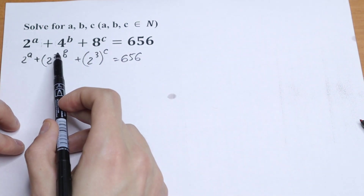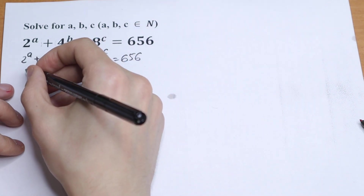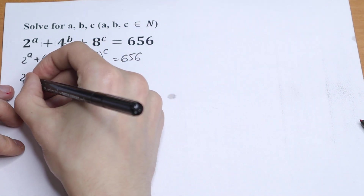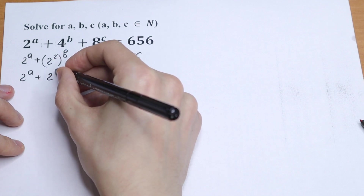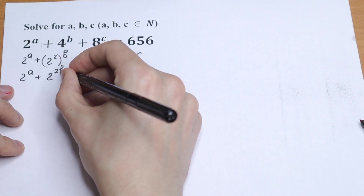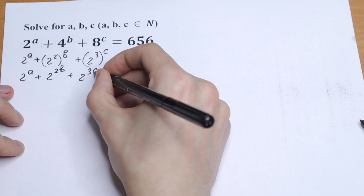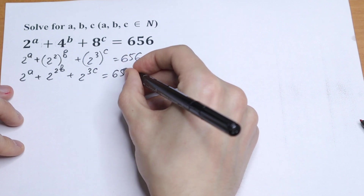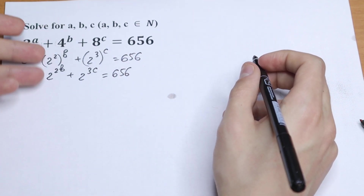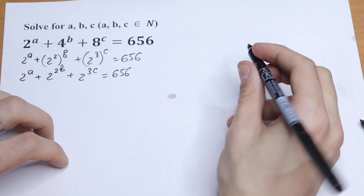We can multiply these powers — this is the power rule. What we will have: 2 to the power a, plus 2 to the power 2b, plus 2 to the power 3c, equal to 656. We're just using the power rule.